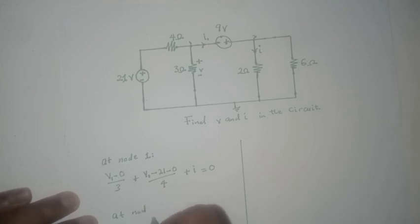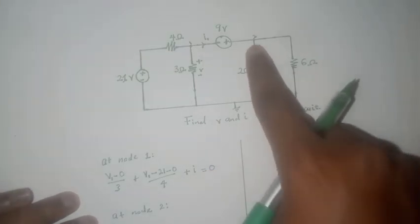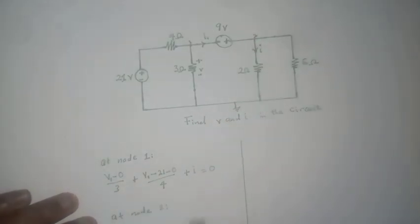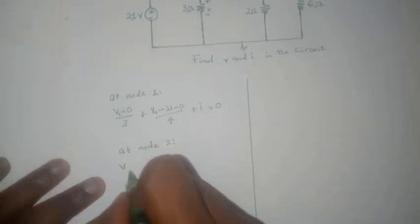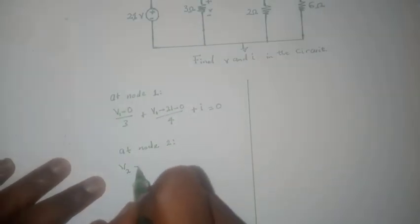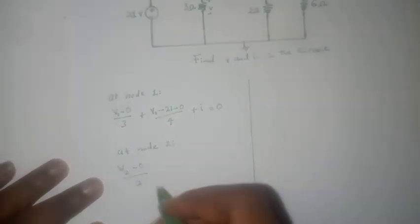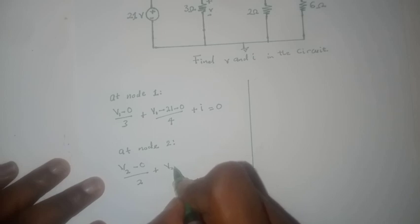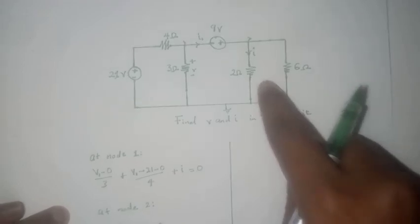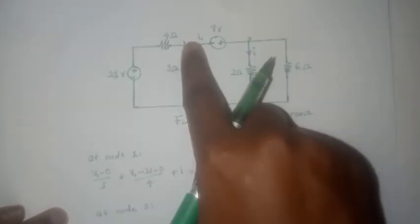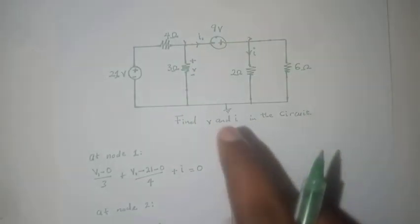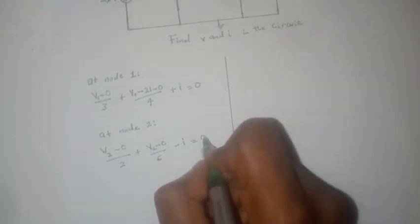So we then proceed to node two. At node two what we do is we write the current for this branch and that will be v2 minus zero divided by two, then we write for this branch that would be v2 minus zero divided by six. Then we write for this branch, since the current i1 is entering the node so it would be minus i1 equals zero.